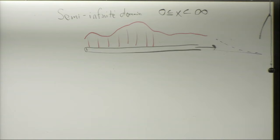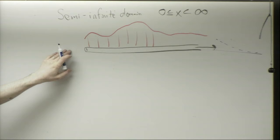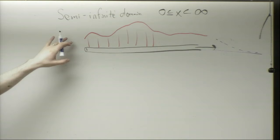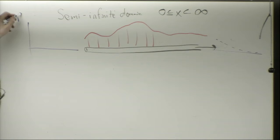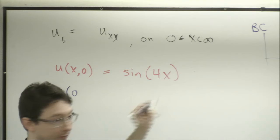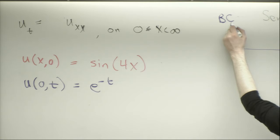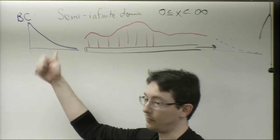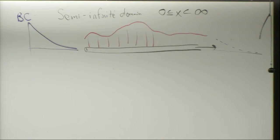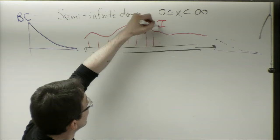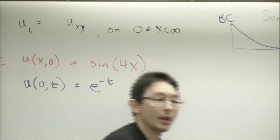What else do I need? At the left boundary condition, this is a real physical end of a steel rod. It could be insulating with u_x equals 0, or I could fix a temperature, or have a controller actively pumping in energy. My boundary condition here is going to be u at x equals 0 for all times t equal to e to the minus t — an exponentially decaying temperature imposed on the left boundary.